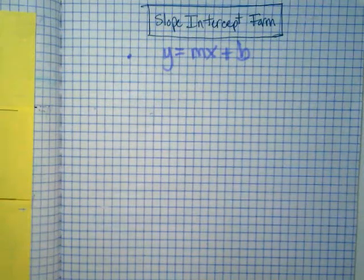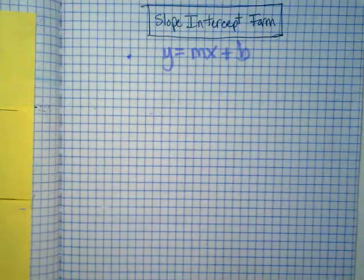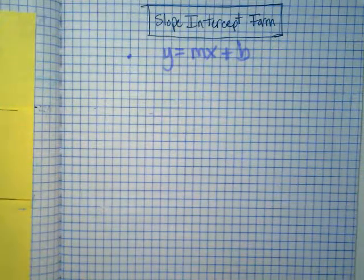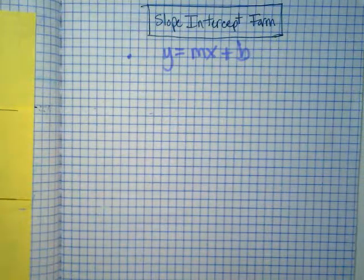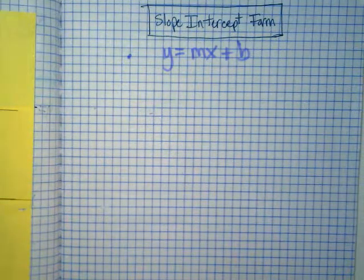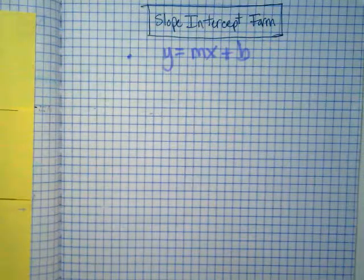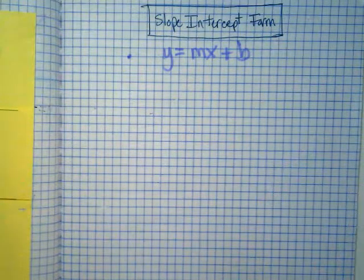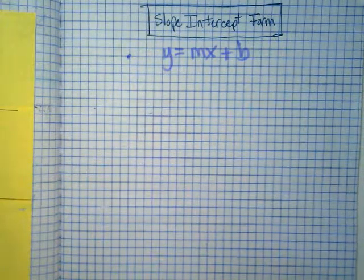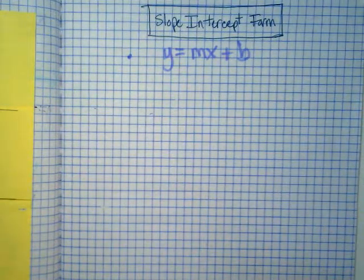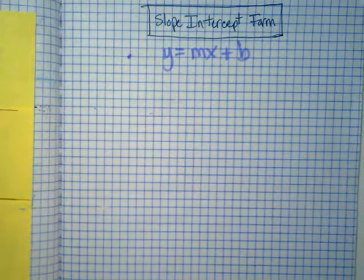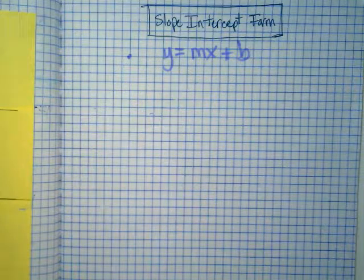When you get to algebra 2, your high school teachers will expect you to remember everything from algebra 1. This is a way for you to access that information. One of your classmates in sixth period has a sister at the high school who said she saw her using her notebook during homework. Why are we copying down the steps that are in the textbook? Because you're not going to have this textbook in two years when you're taking algebra 2, but you will have access to your own notebook.